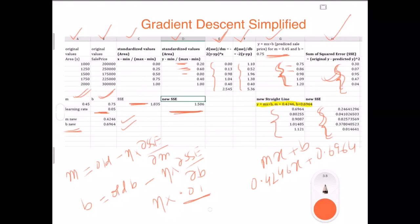I hope you have got this so far. It is very straightforward. We are just plugging new values for M and B and then we are trying to calculate everything again: the straight line, the sum of squared error.